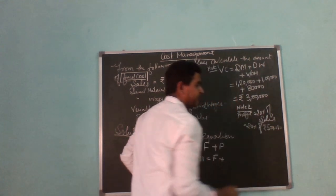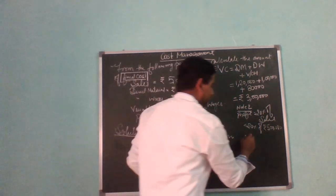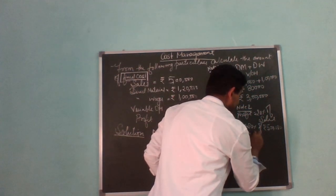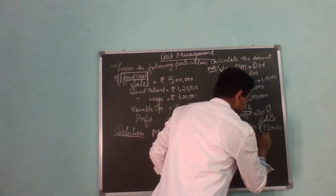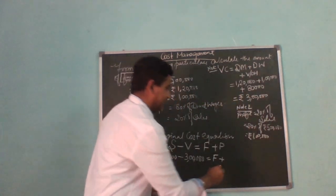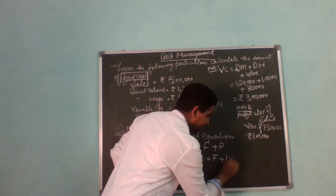Is equal to fixed cost plus 1 lakh rupees. 5 lakh times 20% equals 1 lakh. So profit is 1 lakh rupees.